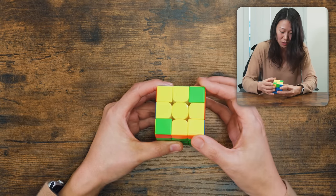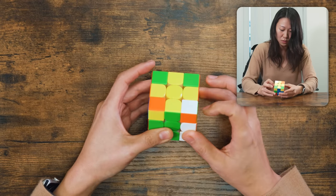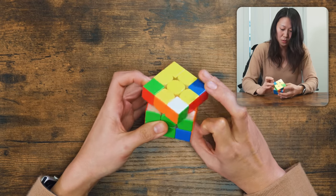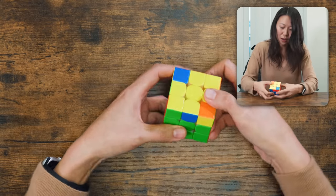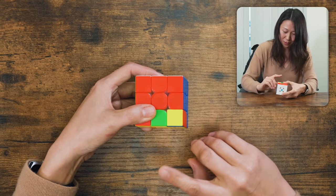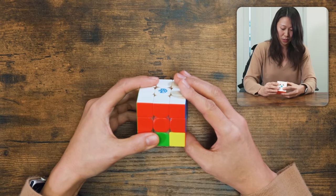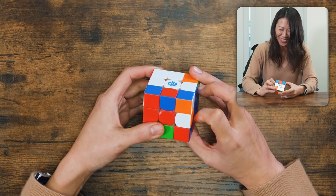So these two corners actually matches the three sides of the color, which means the other corner, it's not matching. Right hand, one, two, three times. Then turn it to the right.